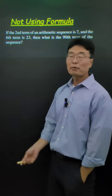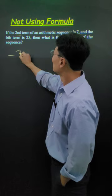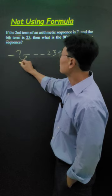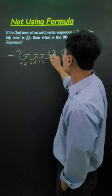Here, we have an arithmetic sequence where the second term is 7 and the sixth term is 23. An arithmetic sequence is where you add the same value to go to the next number.